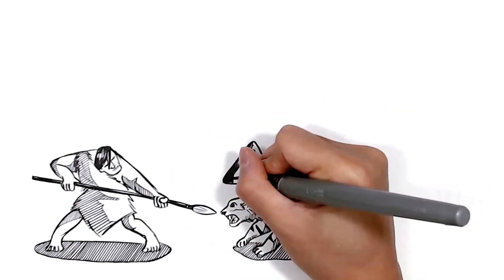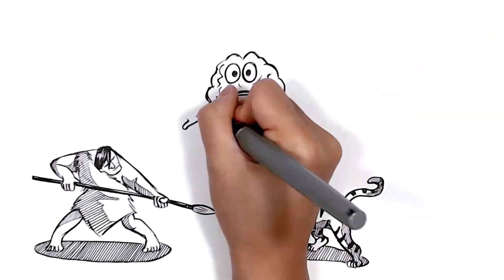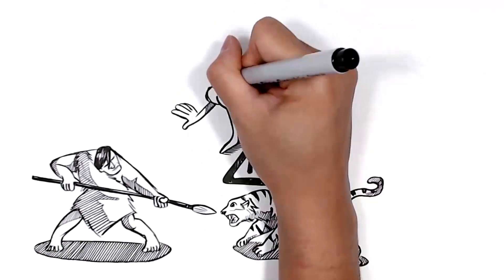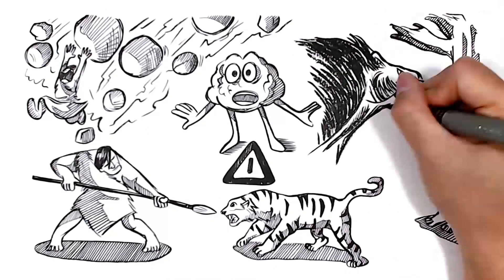Our fight, flight or freeze survival response, the FFF for short, is designed to mobilize our brain and body to fight an enemy, run from an avalanche, or freeze to hide from a predator.